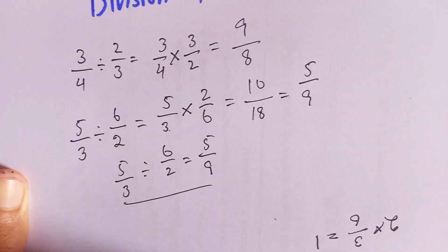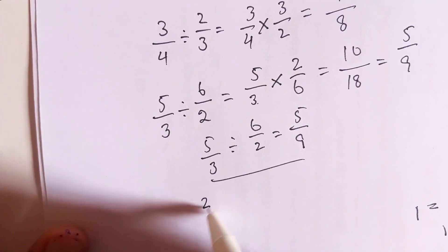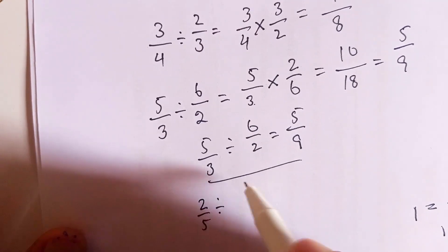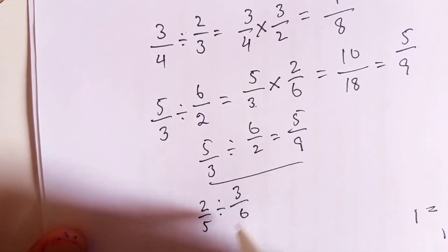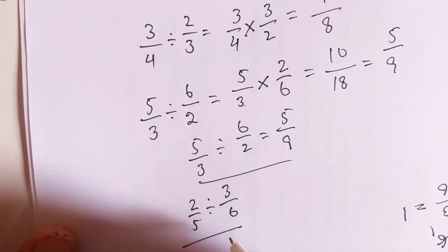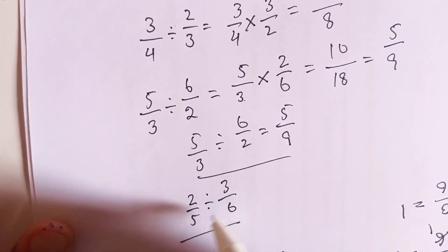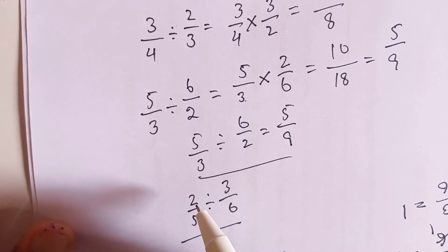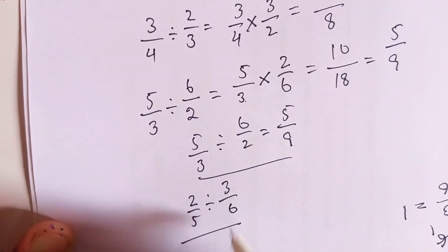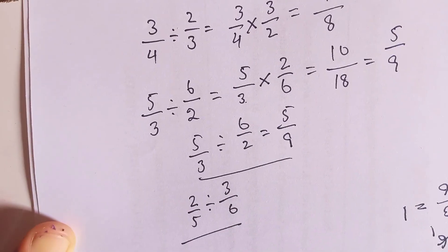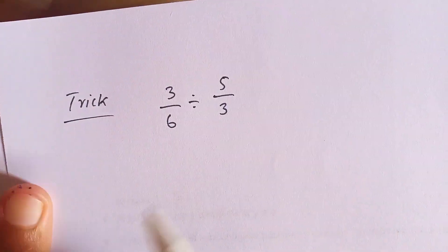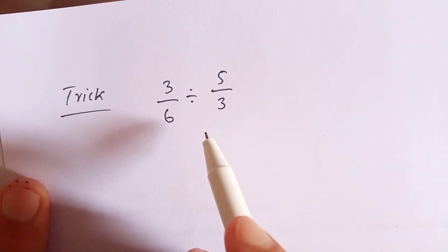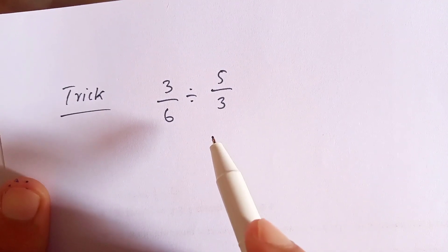That is the final answer. Now find the division of 2 over 5 divided by 3 over 6 — it is up to you to solve this question in the comment section. Now we are going to talk about the trick that you can use during division.